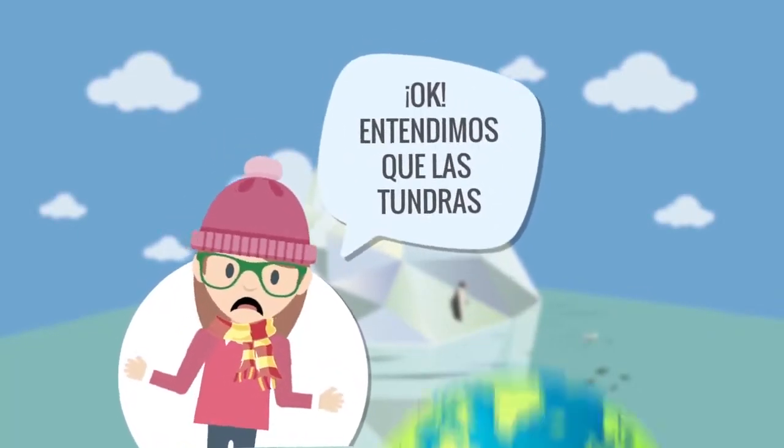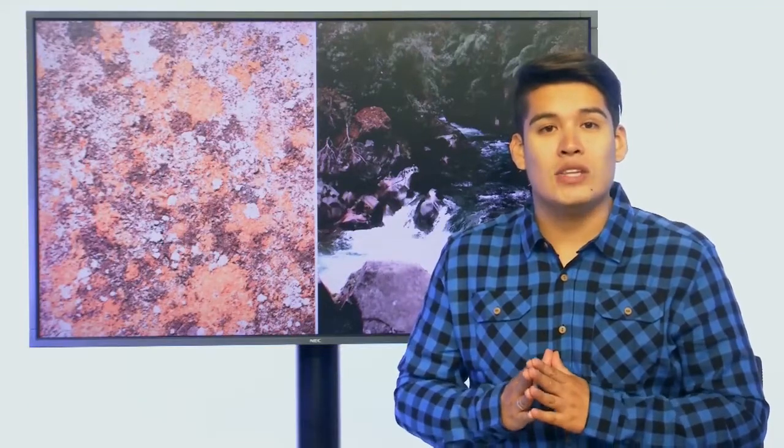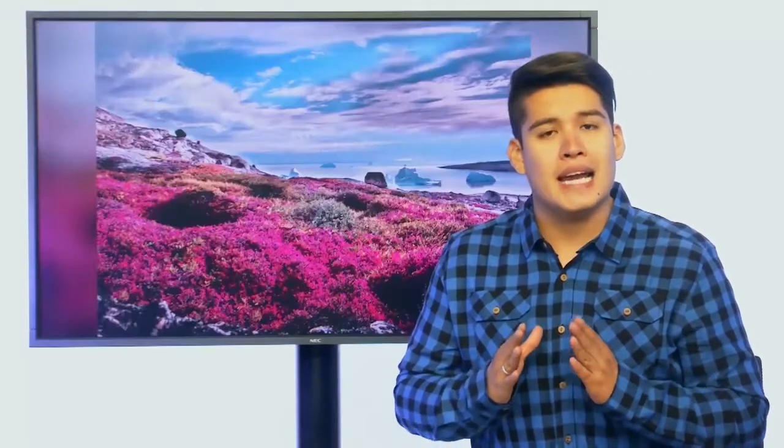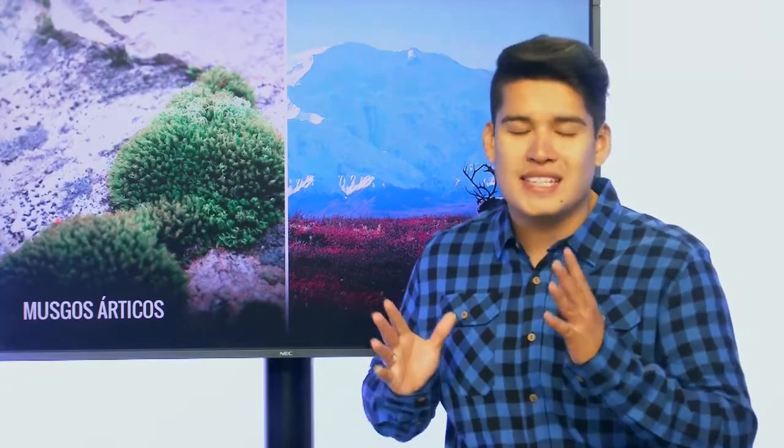Las tundras pueden estar tanto en el hemisferio norte como en el hemisferio sur. Se caracterizan por ser biomas de subsuelos helados que están cubiertos casi en su totalidad por musgos y líquenes. La vegetación crece apiñada para conservar el calor y está muy cerca al suelo para evitar los fuertes vientos. Se pueden distinguir tres tipos de tundras: la alpina, que se encuentra principalmente en los espacios montañosos; la ártica, en zonas más bajas; y la Antártica, donde la biodiversidad es muy escasa.